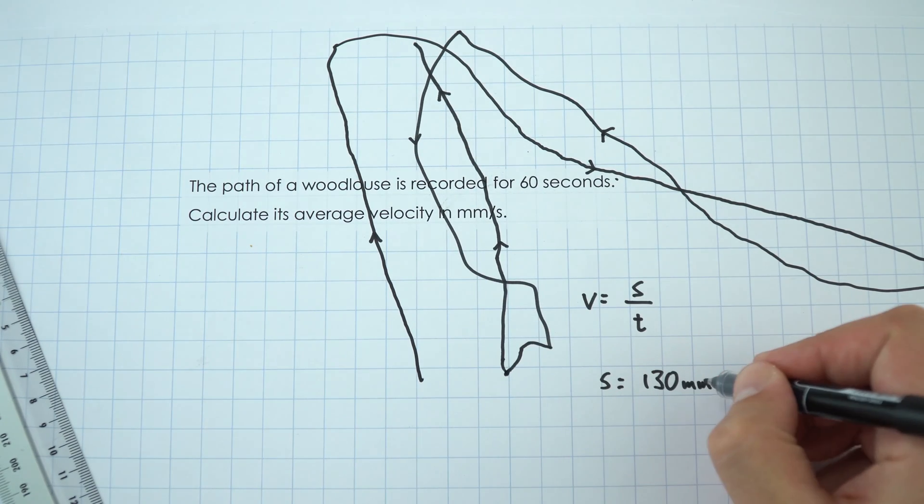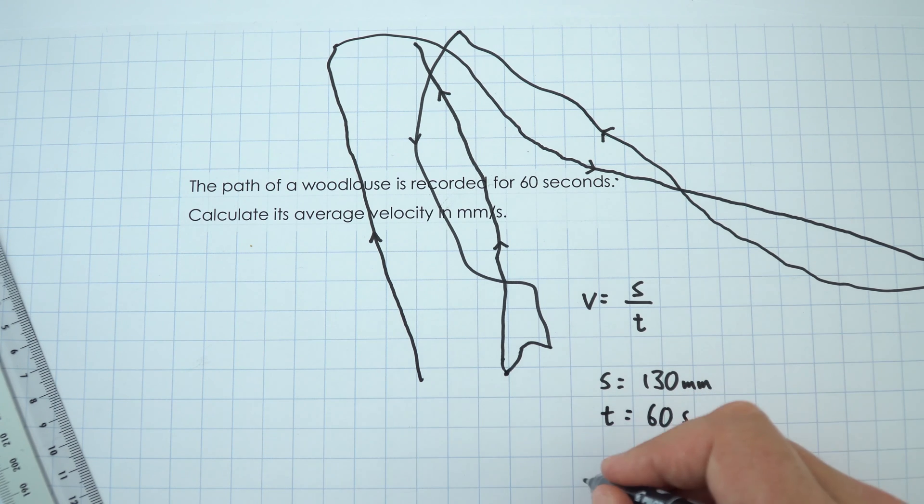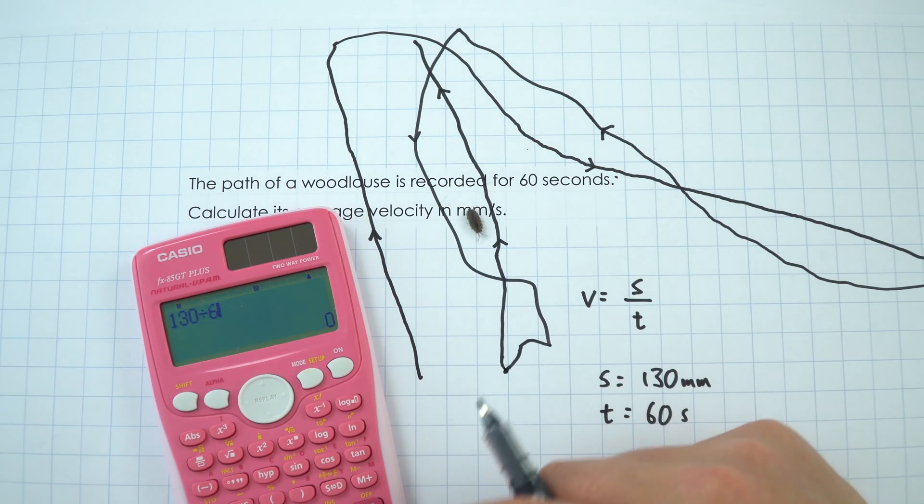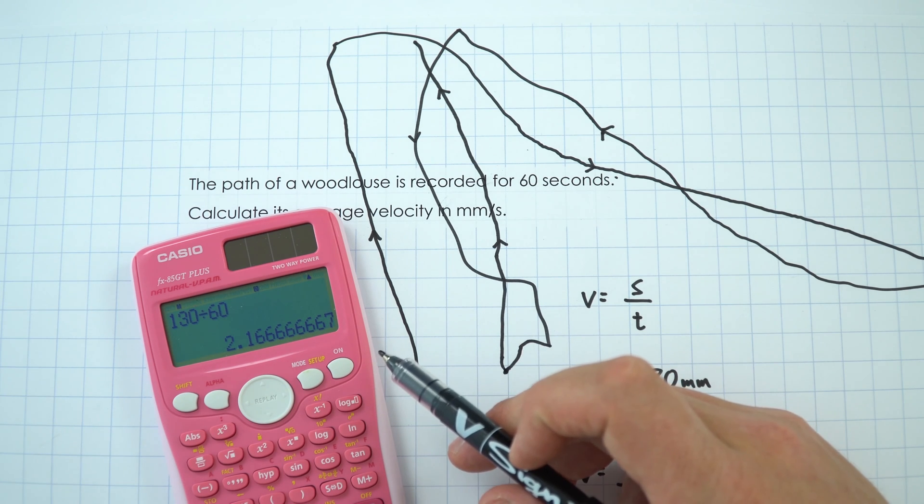So the displacement is 130 millimeters, the time because it's for 60 seconds is 60 seconds, and that means its average velocity is 130 divided by 60, and that gives a value of 2.2 millimeters per second.